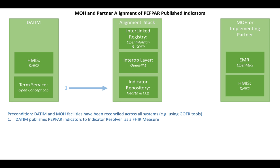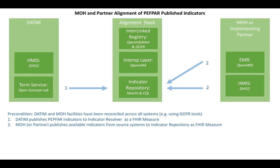We begin with Datim publishing PEPFAR indicators to the indicator repository using the FHIR measure standard. This is the way that an indicator is defined — not the actual data values in the FHIR measure, but it describes how it can be disaggregated, the period of reporting, etc. Next, the partner systems can also publish their available indicators, either from their HMIS or from a source data system.